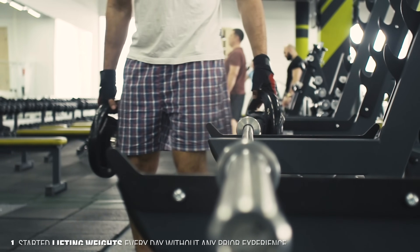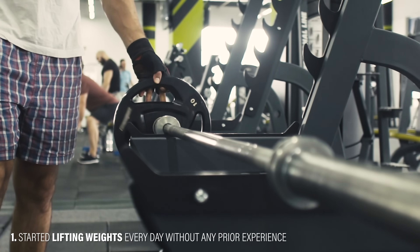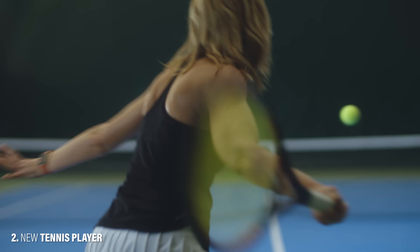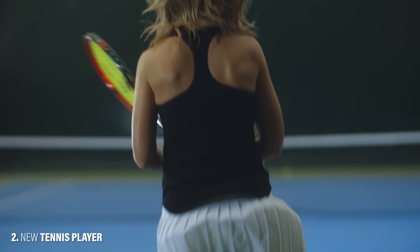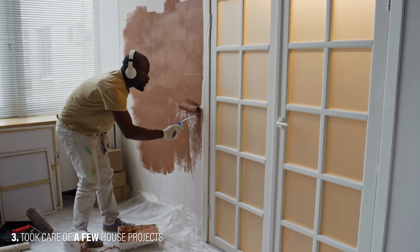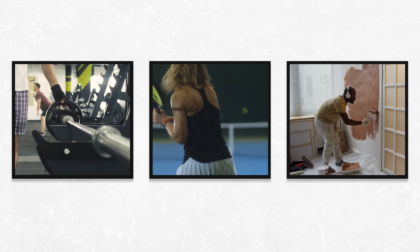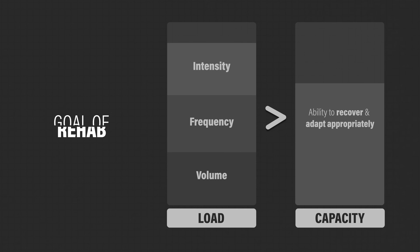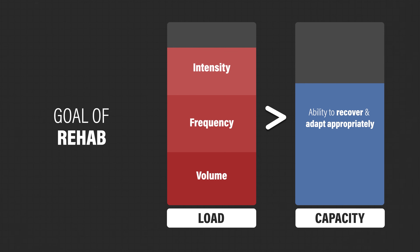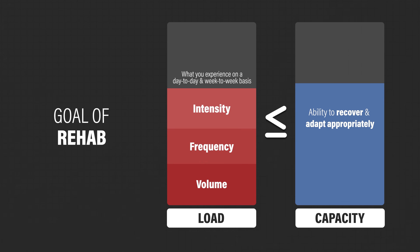Here are three examples. One: you decided to get in better shape, so you started lifting weights every day without any prior experience. Two: you're a new tennis player who wanted to get good fast, so you joined a club to play after work each day. Three: you took a week off of work to take care of a few projects around the house. In these examples, you likely loaded your lateral elbow tendons more than what they're used to. Therefore, the goal of rehab is to initially reduce those loads to a tolerable amount and then make sure that your capacity is greater than or equal to the various loads you're experiencing on a day-to-day and week-to-week basis.